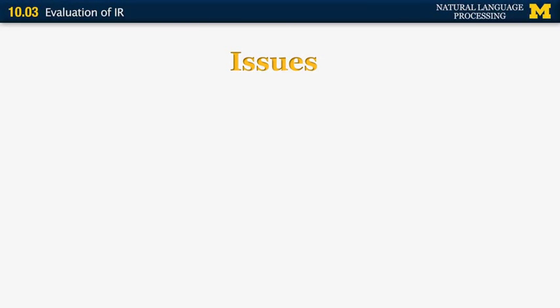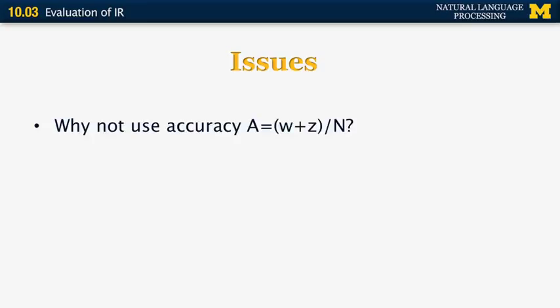One thing that can easily come to mind is why not just use accuracy as the evaluation metric. Accuracy would be the sum of the two good values, W (true positives) and Z (true negatives), normalized by N. One problem is that in a typical case, the value of Z is much larger than W, so it's completely possible to get an accuracy of 99.5% or even higher even if W itself is zero, which is obviously not what we want. We don't want to emphasize true negatives over true positives.